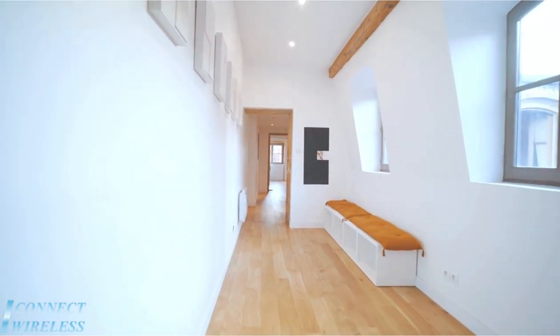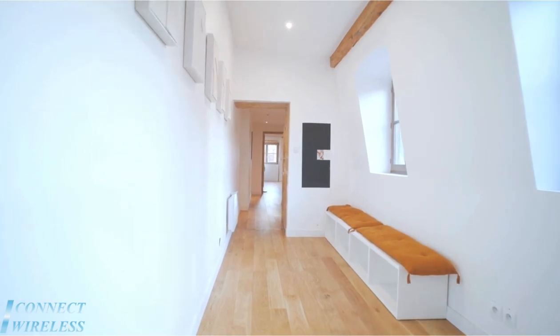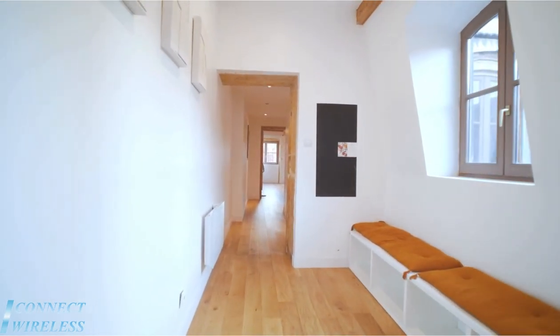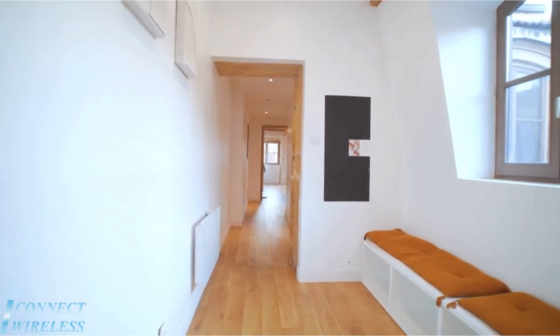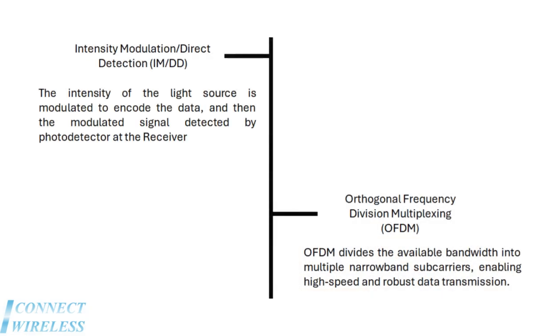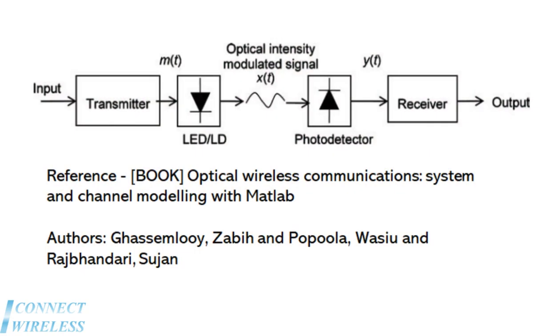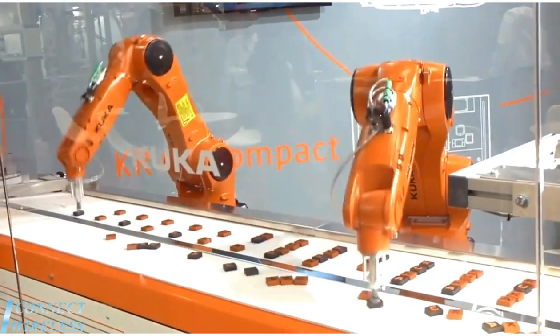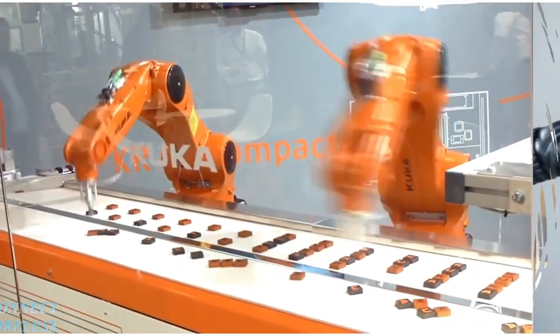This cutting-edge technology opens doors to a wide array of unprecedented use cases that were once considered impossible. For example, LED lights inherently support the intensity modulation technique, wherein switching the intensity of light can be used for modulation and reliable data transmission. This basic intensity modulation technique makes it very suitable for time-critical use cases.